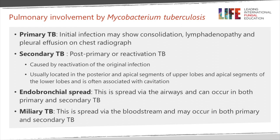Depending where that cavitation extends determines the pattern of disease. If it spreads into the pleura, you'll get a pleural effusion or empyema. If it spreads into an airway, the infectious organisms in the cavity will spread to the airways and cause widespread endobronchial disease. Miliary TB is when the blood vessels are invaded, going into the pulmonary veins, through the heart and out into the systemic circulation, causing widespread seeding of small areas of infection.